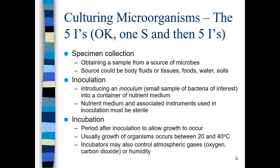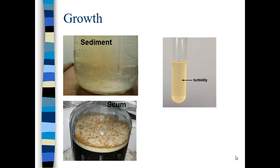Usually the key incubation condition is temperature. Sometimes you may control environmental gases like oxygen, carbon dioxide, or humidity. In our laboratory, we maintain a temperature of 37 degrees Celsius, which is about physiological temperature, and we incubate the microbes overnight or for 48 hours. Then we start to see growth. You can see growth as sediment — particles that sink to the bottom of the vessel. You can have turbidity, which is cloudiness. Sometimes you have scum floating on top. And then there's what's called flocculant — particles that don't float or sink but stay suspended in liquid.